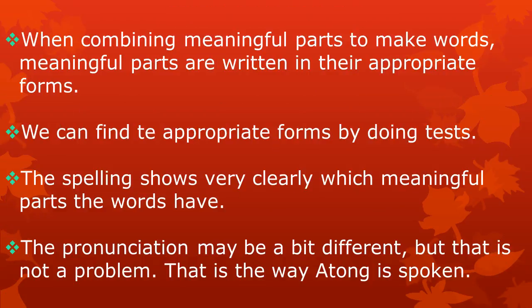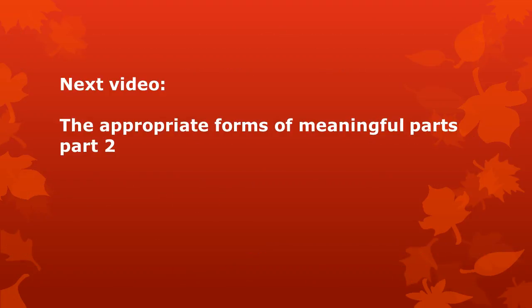In this lesson, we have learned that when combining meaningful parts to make words, meaningful parts are written in their appropriate forms. We can find the appropriate forms by doing tests. The spelling shows very clearly which meaningful parts the words have. The pronunciation may be a bit different, but that is no problem — that is the way Atong is spoken. There are other ways in which spelling and pronunciation can differ. In the next lesson, we will look some more at the appropriate forms of meaningful parts.